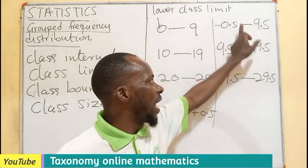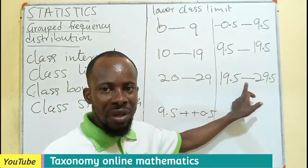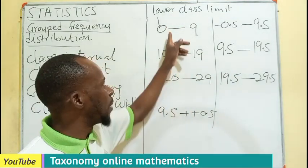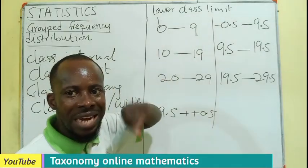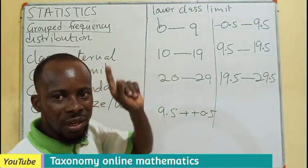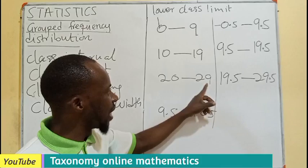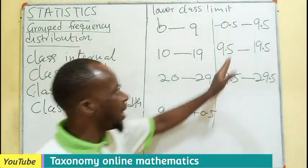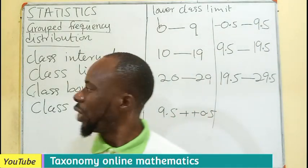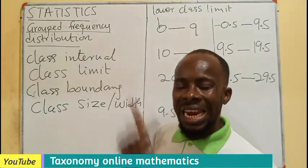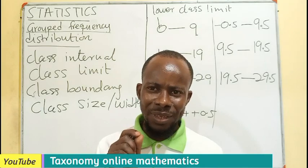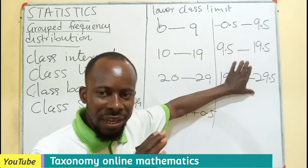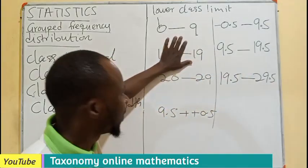Note that the class size is not based on the class limits alone. Subtracting 0 from 9 gives 9, and 19 minus 10 gives 9 — but using class boundaries you get 10. So we use class boundaries to determine the class size. This class boundary is used to generate the class size.